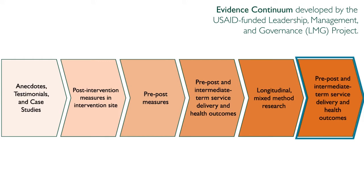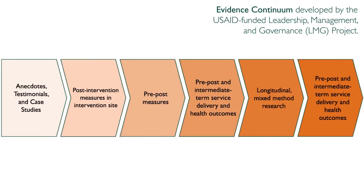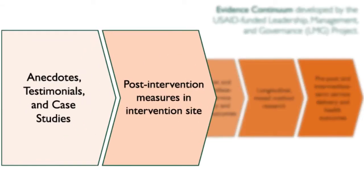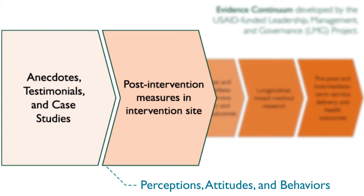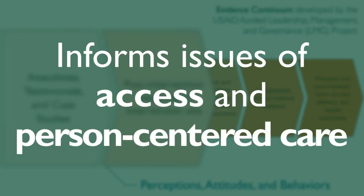On the other side of the spectrum, randomized controlled trials can help show attribution. The most important point about evidence is to use the right kind of evidence for your intended purpose. If we want to know how a program has affected an individual or a group of people, then anecdotal evidence can provide rich detail on an individual's perceptions and perceived changes in attitudes and behaviors.